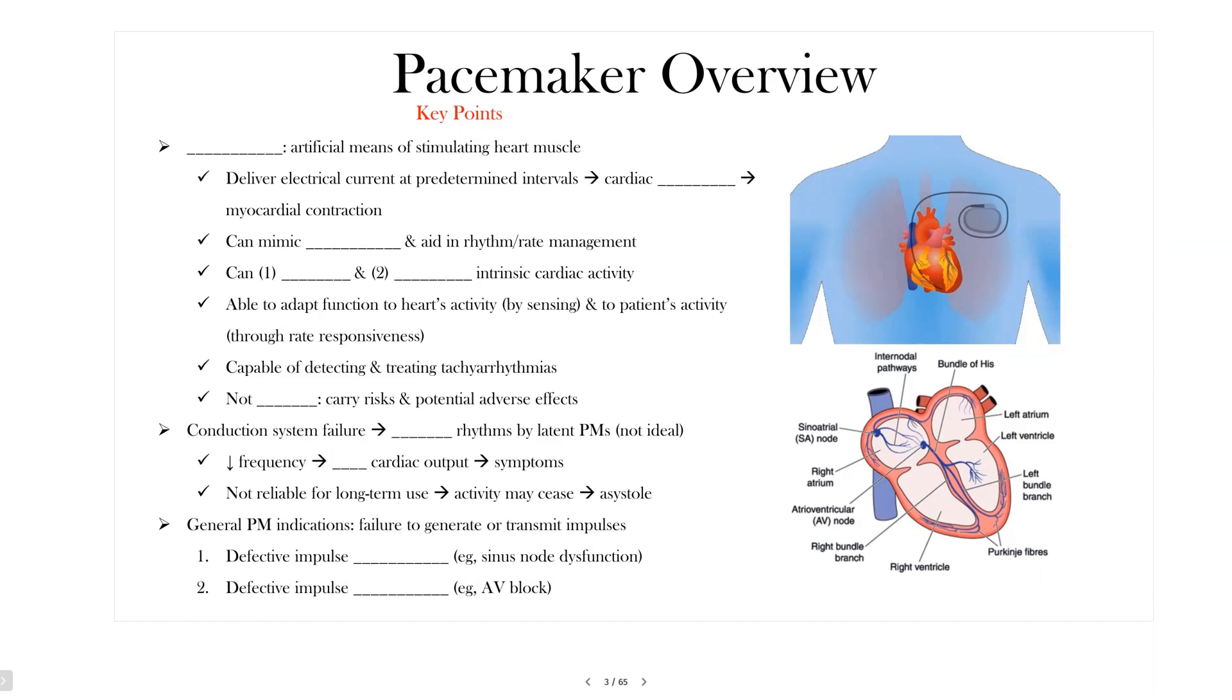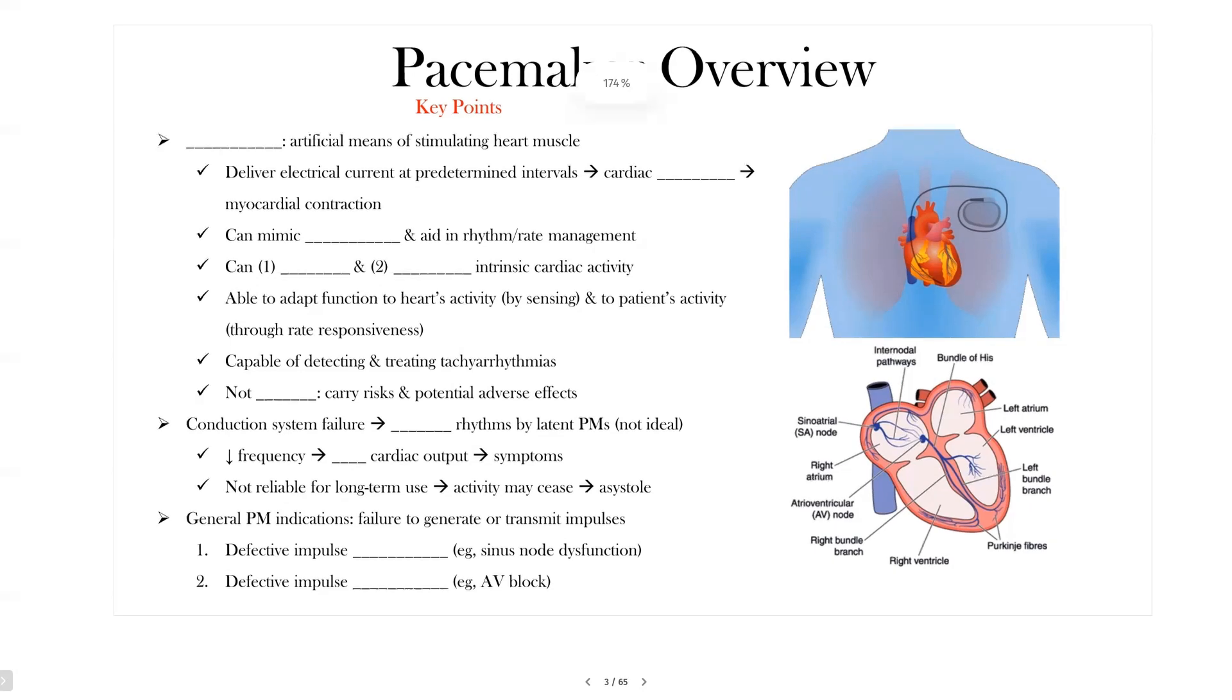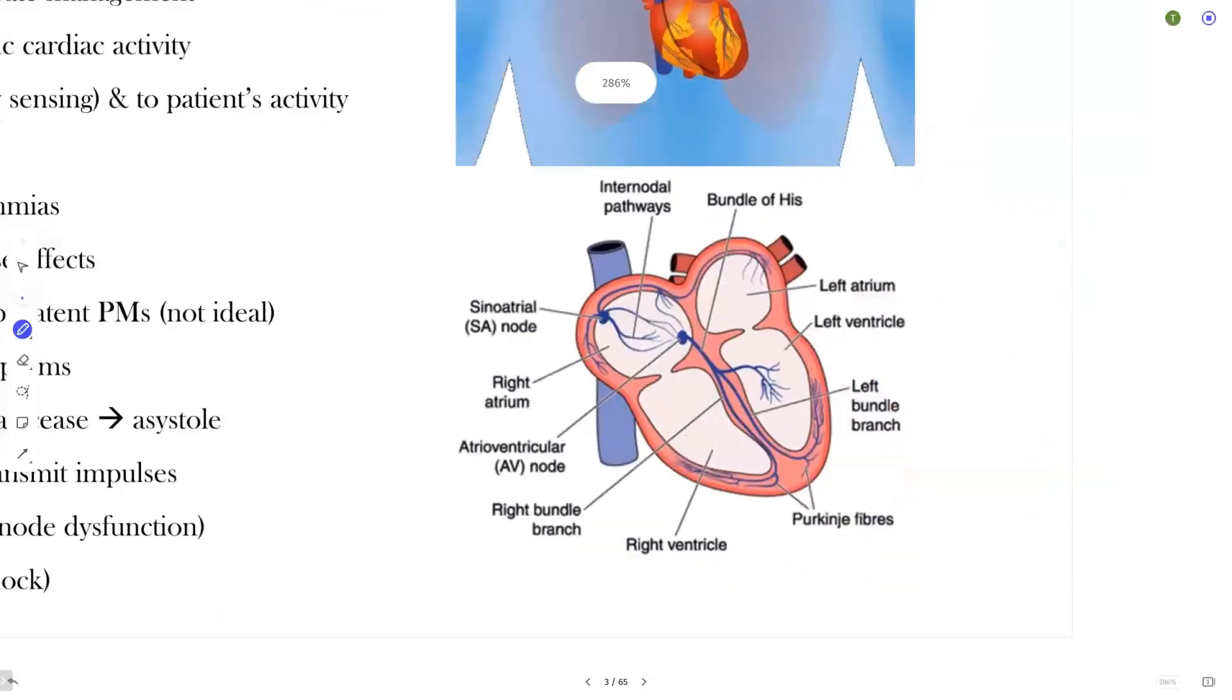They pass through to enter the His-Purkinje system to rapidly spread and depolarize the ventricles. When intrinsic cardiac automaticity or conduction integrity fails, the electrical excitability of cardiac tissue allows a small external electrical stimulus to drive myocytes to a threshold, thereby depolarizing neighboring myocytes and propagating the electrical front and near simultaneous muscular contraction. Pacemakers essentially provide an external stimulus that helps conduct through the heart.